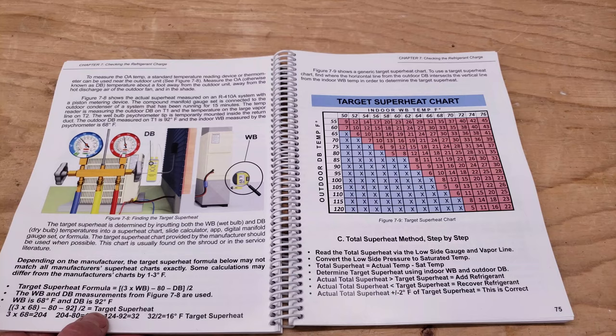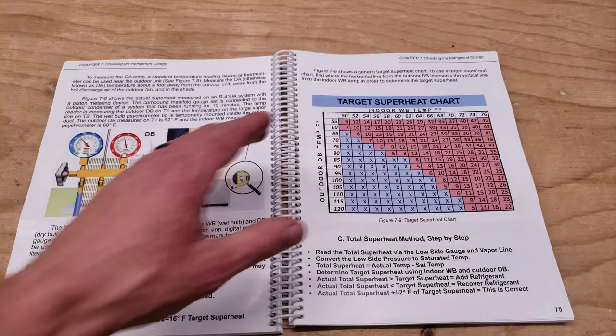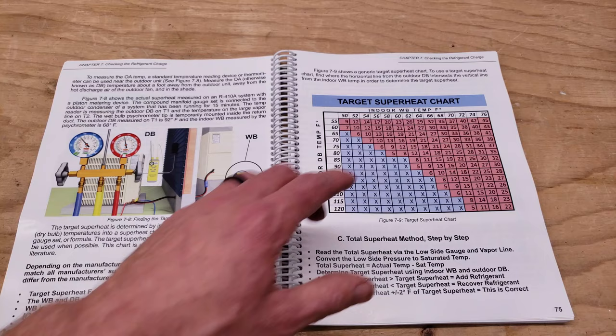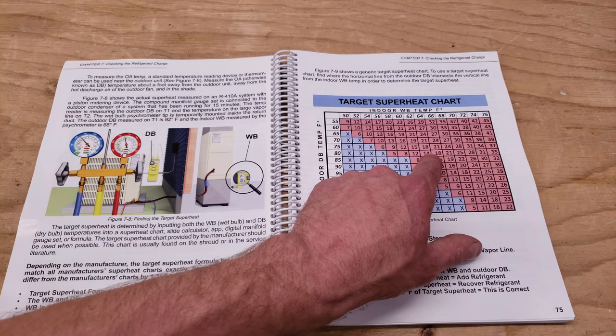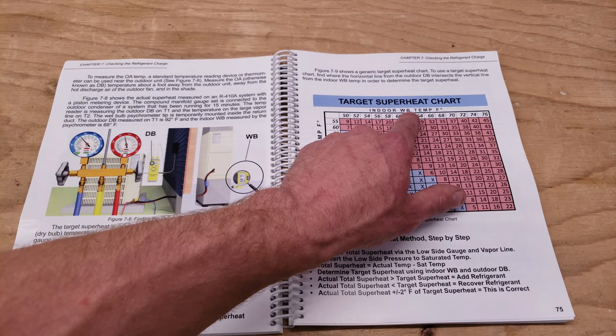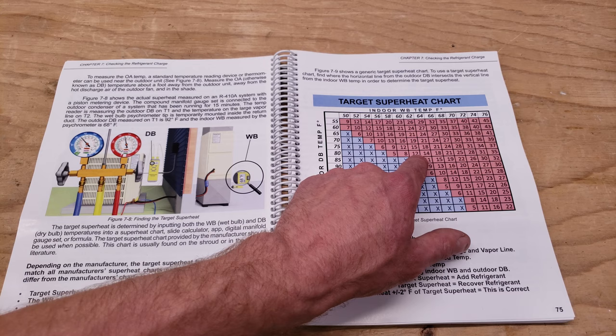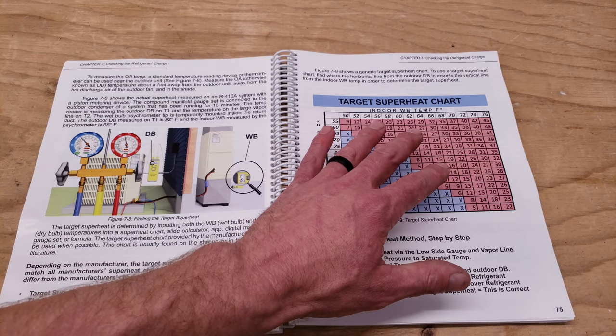If you haven't checked out our book, you should check out the full outline at our website. We have our target superheat chart here, and also on our quick reference polystyrene cards. We have our indoor wet bulb temperature right here. Say we have a measurement of 64 degrees. If we line that up with our dry bulb temperature over here, you can see that our target superheat is 14 degrees. Now as a system runs, the wet bulb temperature is going to lower. So say it lowers to 62 degrees, then your target superheat is going to lower as well, and we're down at 12 degrees of target superheat.